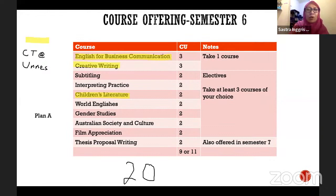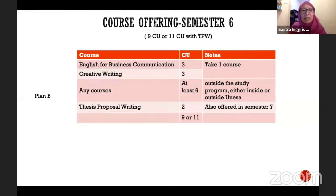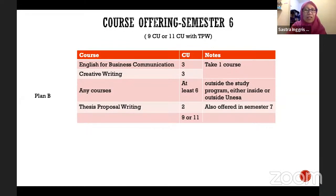This is Plan A — all courses taken at UNESA. For Plan B, you can take up to six credit hours outside our study program or even outside UNESA. You can also take English for Business Communication and Creative Writing at UNES as part of our credit transfer agreement, and take the other six credits here. Or you can go to UNES for the whole semester — it's MBKM, you're free to learn wherever you want.